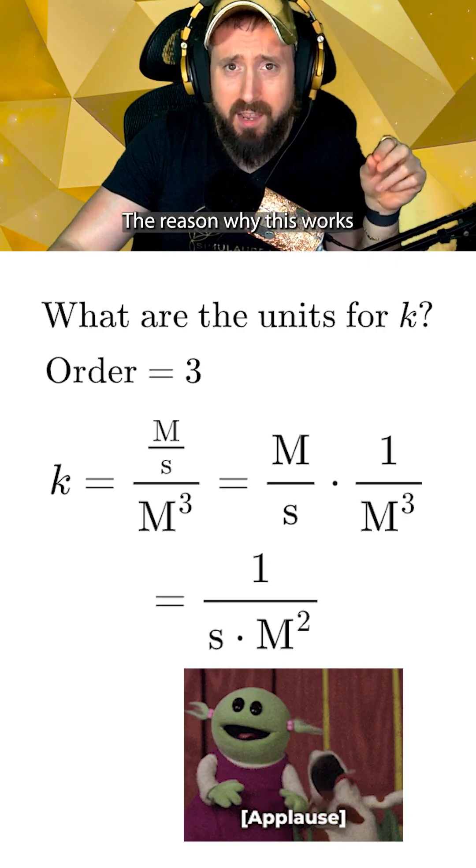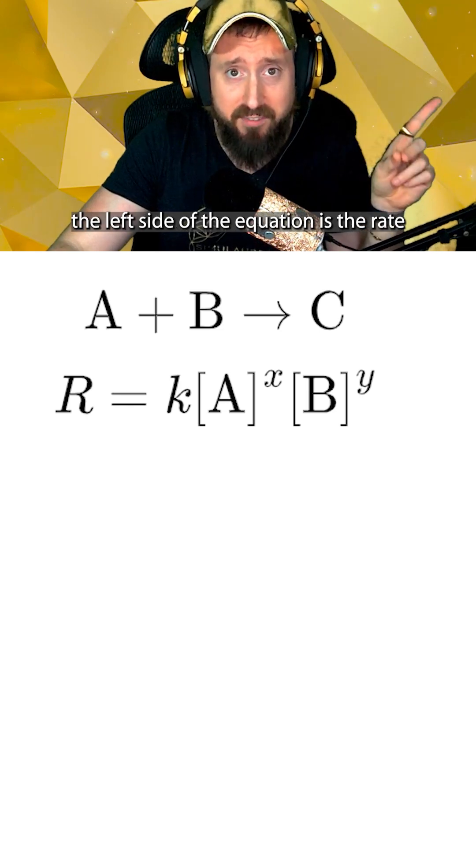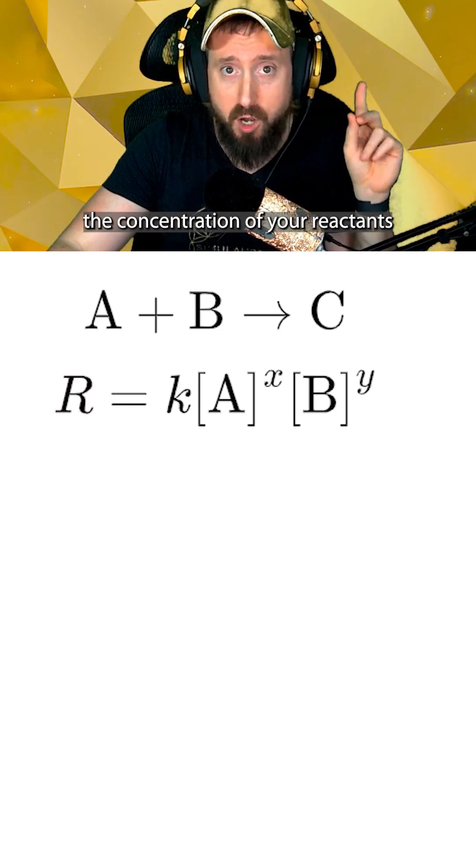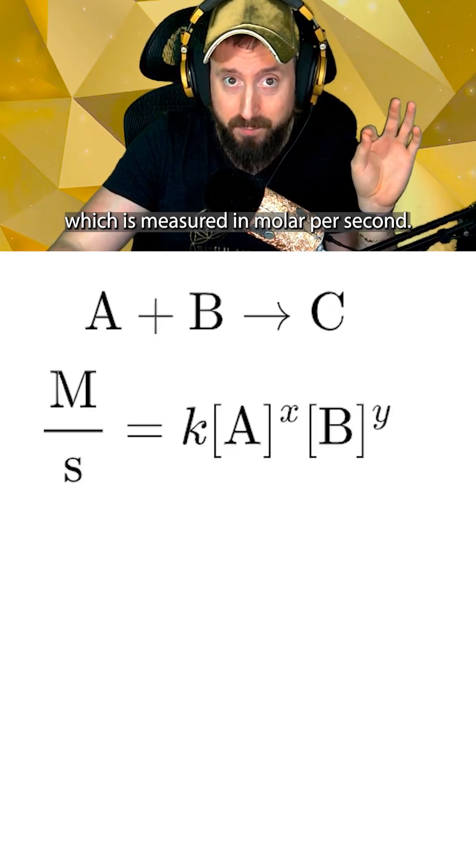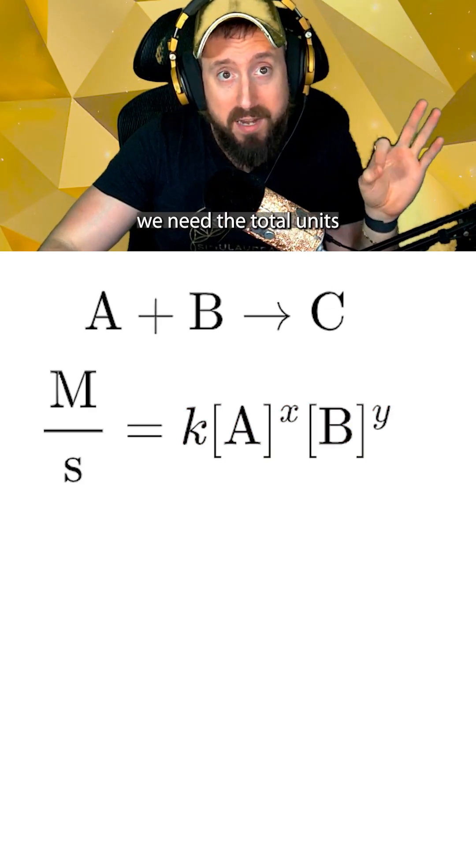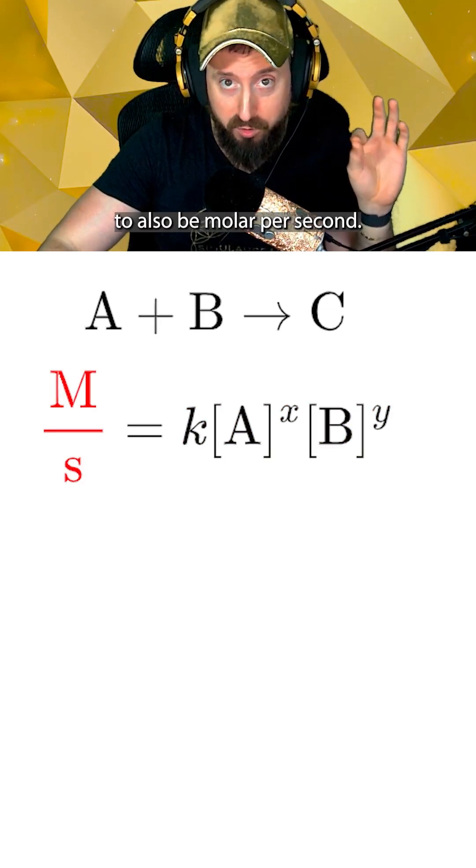The reason why this works is that for a given rate law, the left side of the equation is the rate at which the concentration of your reactants are being consumed, which is measured in molar per second. This means on the right side, we need the total units to also be molar per second.